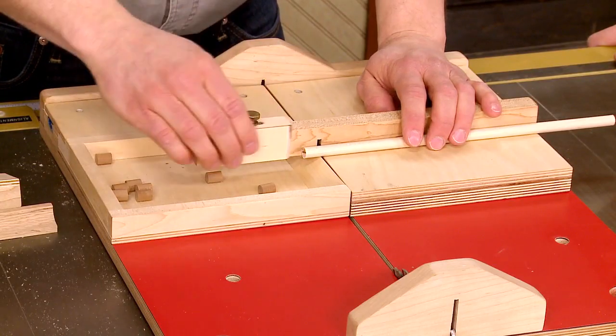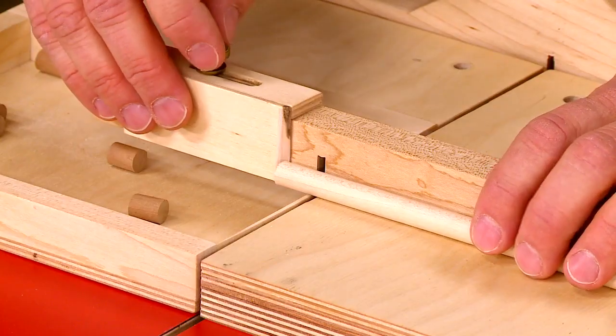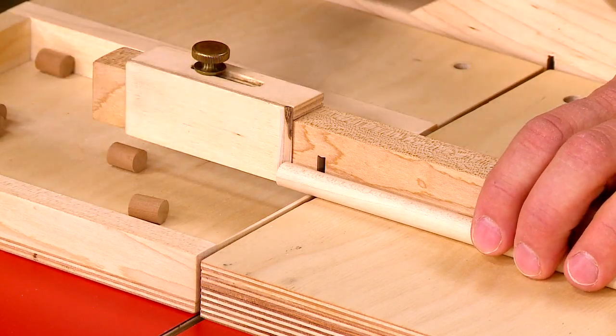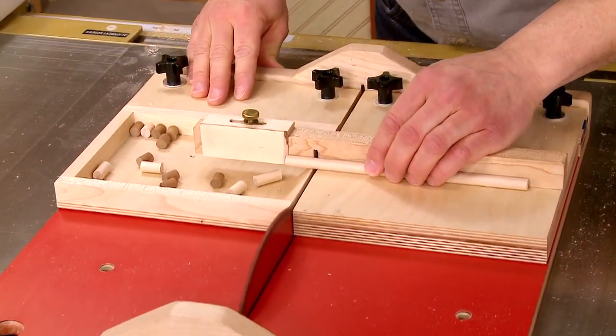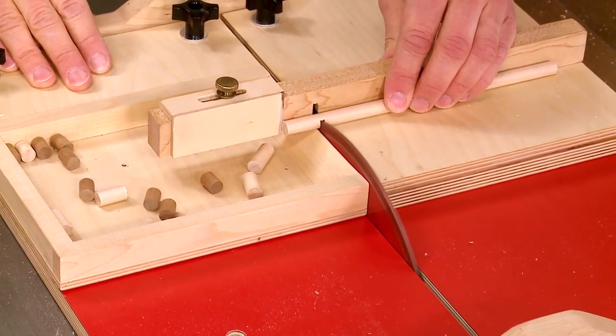On the fence, there's also an adjustable stop so that you can cut the pieces to a consistent length. Using it is just a matter of butting the workpiece against the stop, moving it across the blade where the workpiece falls right into the tray.